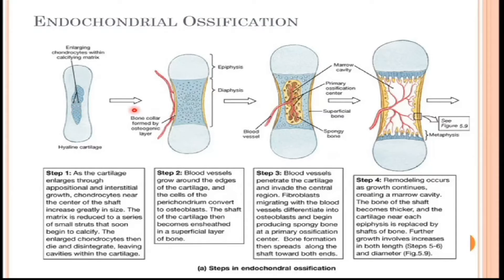Secondly, the blood vessels in the perichondrium release mesenchymal cells that move into those cavities, and then they differentiate into bone-forming cells called osteoblasts. The osteoblasts then start producing bone material.